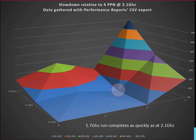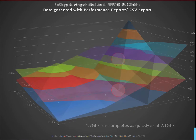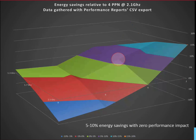There's a fascinating sweet spot at 1.7 GHz — it's running just as fast as at 2.1 GHz. I couldn't measure the difference in time. So if we look at the energy figures that Performance Reports gives us, there's that same sweet spot. You're getting between 5% and 10% energy savings for zero performance loss, just by tweaking the CPU frequency — because the report told us this code was bottlenecked on memory.